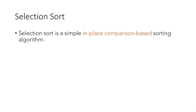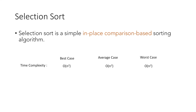In this video, we will learn about selection sort. Selection sort is a simple in-place comparison-based sorting algorithm with time complexity of O(n²) in best, average, and worst case, and a space complexity of O(1).